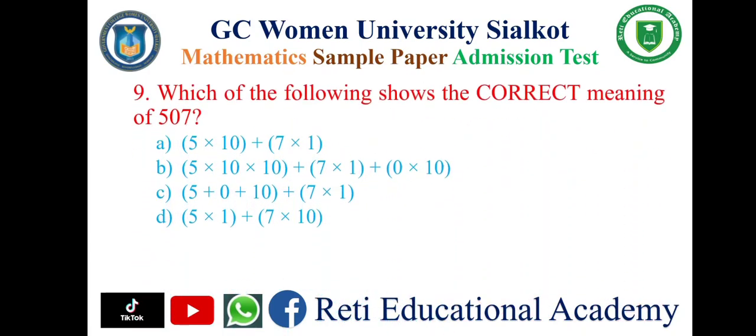Question number nine: Which of the following shows the correct meaning of 507? And the correct answer is B.